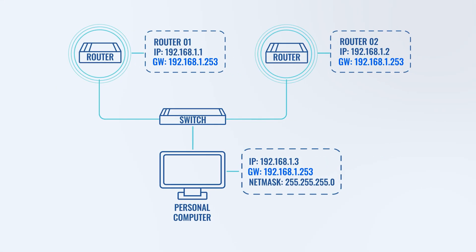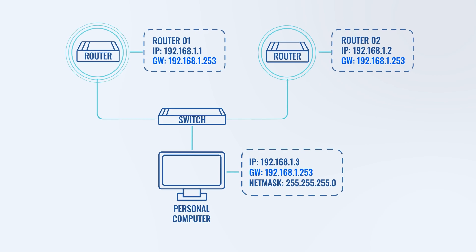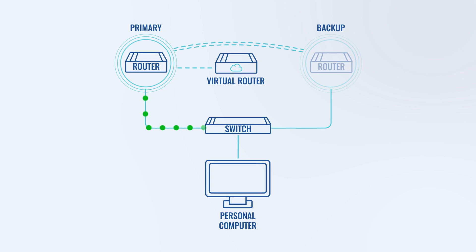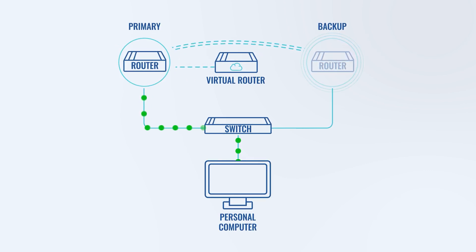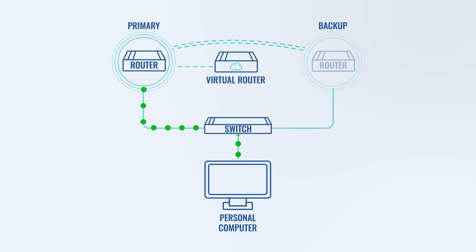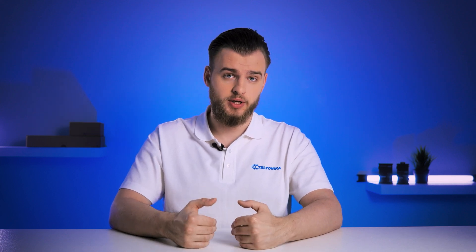Both of these routers advertise the same virtual gateway IP address to your host device. While in general networking this may seem wrong, VRRP uses unique IDs to differentiate between these routers. Each router broadcasts its VRRP advertisement, which includes a priority value. The router with the highest priority value becomes the primary router responsible for routing network traffic. Routers periodically broadcast VRRP advertisements containing their priority, and these broadcasts are typically sent to a multicast group on the local subnet.